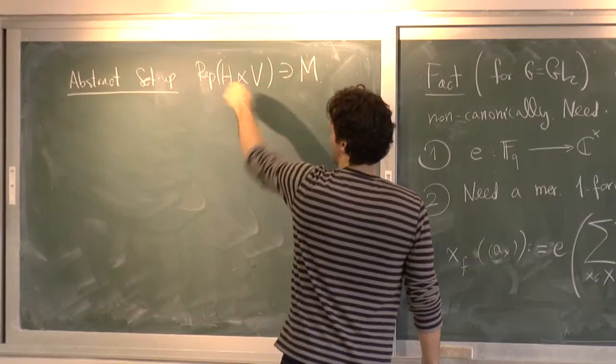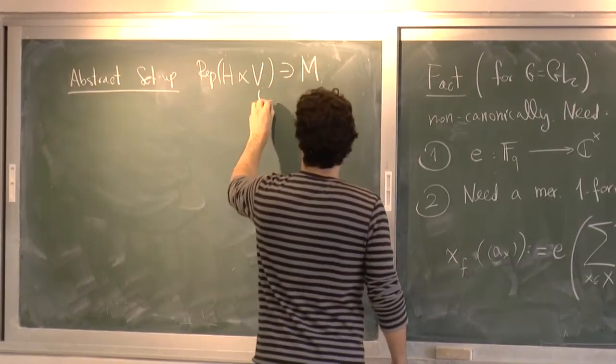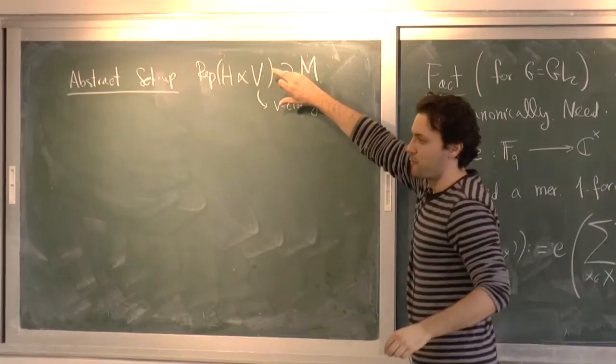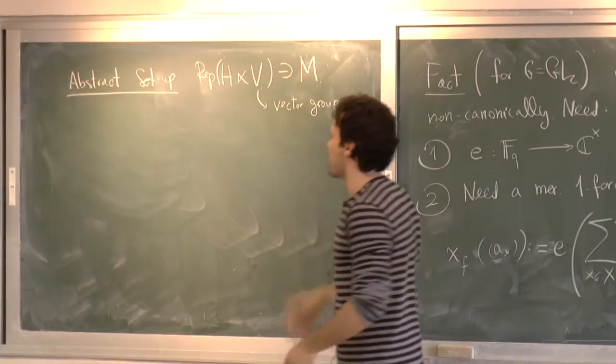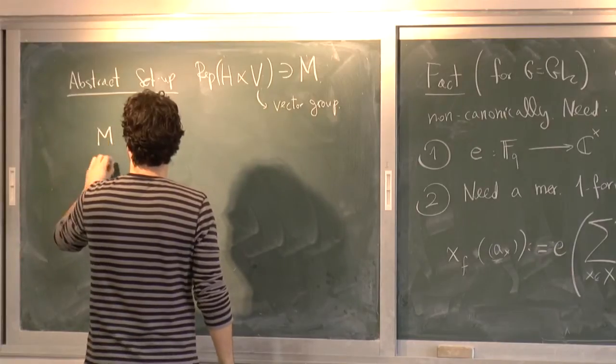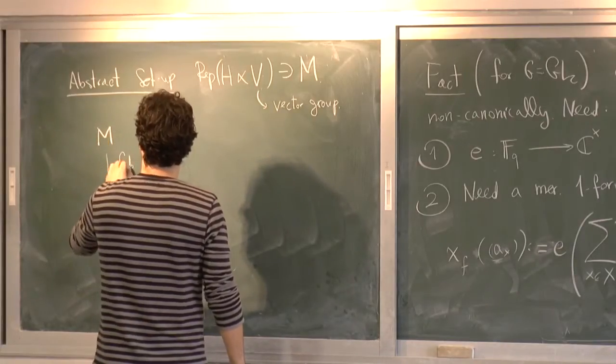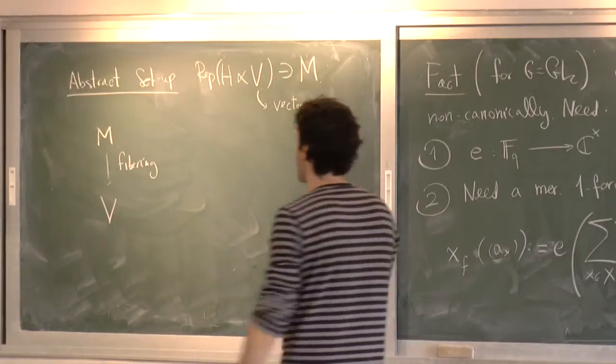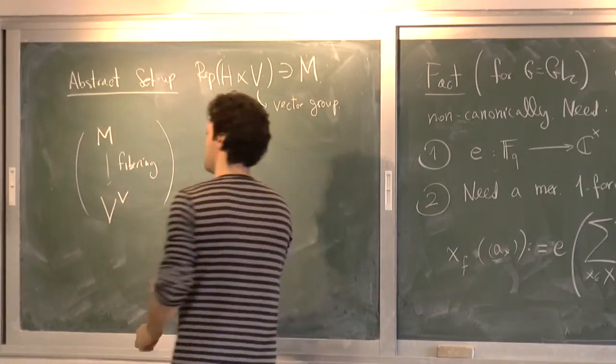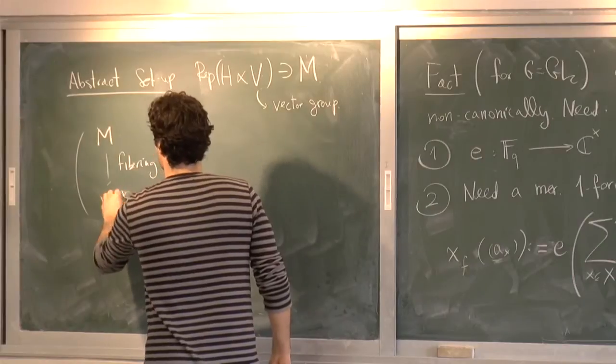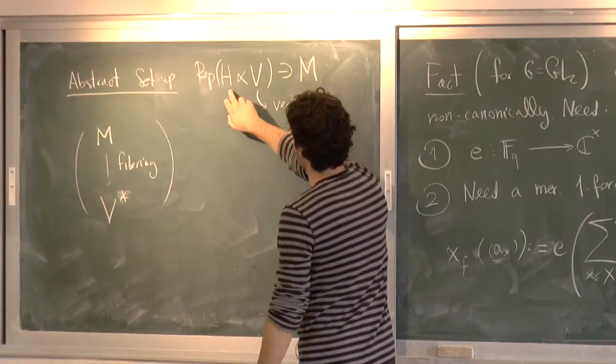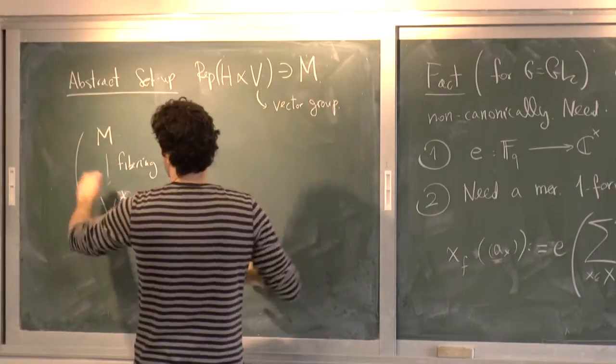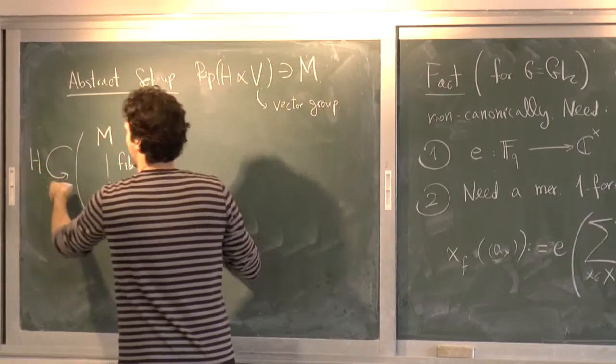So let me just report it here. So we have M a representation of this semi-direct thing, where V is a vector group. So then upon Fourier transforming the action of V on M, I can imagine M as fibering over V dual. And the fibers are the Fourier eigenspaces. And then, sorry, we check the dual. And I have an induced action of H on V dual. That's the dual action. And moreover, I have an action of H on M. And this H acts on the old picture.